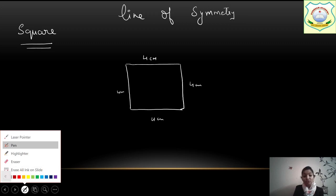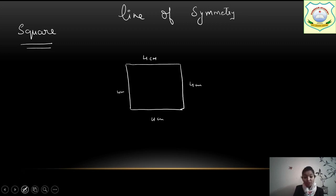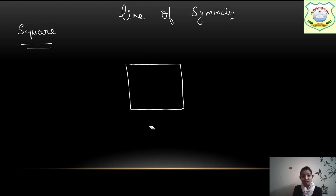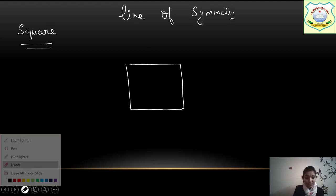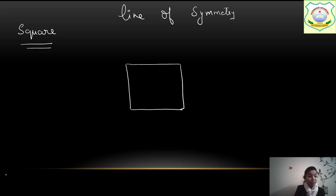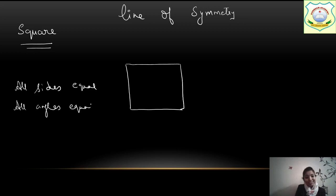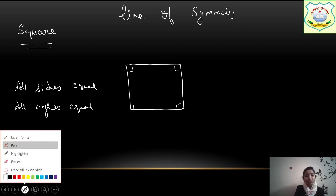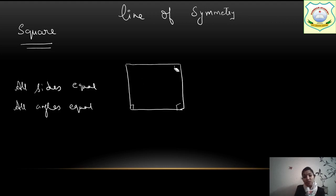This work you have to do in the white page of your notebook. Take a measurement of 4 cm or 5 cm and draw these lines. After drawing, write this: all sides equal. A square has all sides equal and all angles equal — how many angles? 90 degrees. 4 angles, all 90 degrees. If a side is taken as 4 cm, all sides will be 4 cm; if 5 cm, all will be 5 cm.